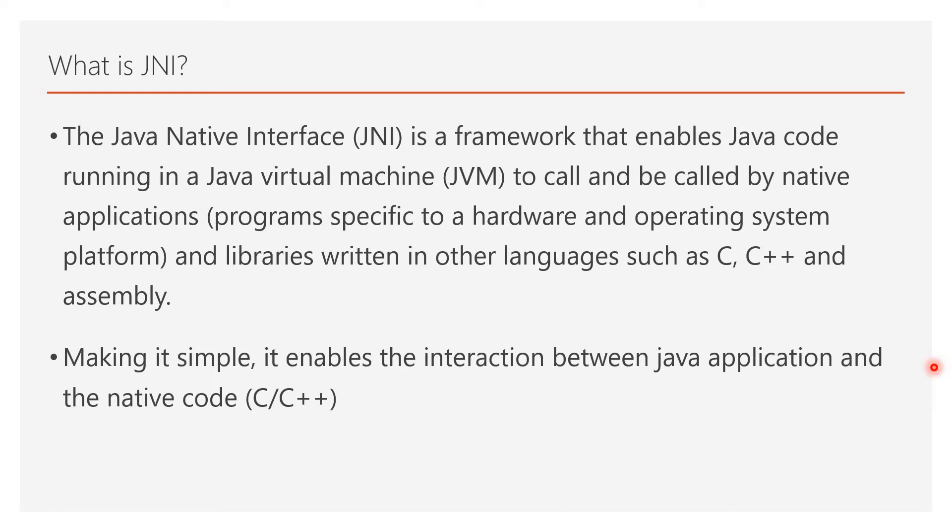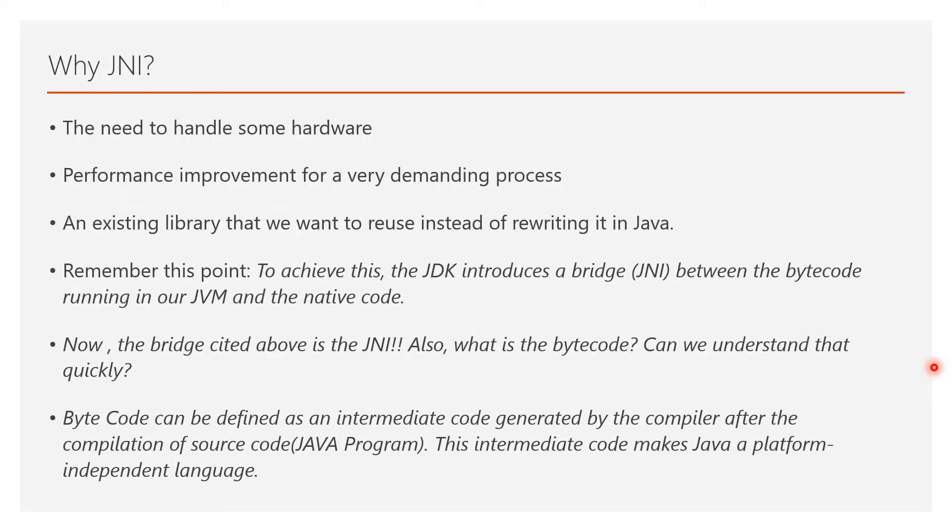JNI is a simple framework which helps Java code in calling, or being called by, any native applications. My Java code is running in JVM and I have a necessity to call native applications written in C, C++, or even assembly language. For that to be done I need a framework, and that framework is nothing but JNI. It enables the interaction between the Java application and the native code — JNI is the mediator, the facilitator.